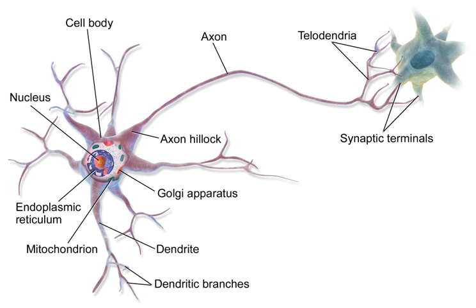Other structural proteins important for neuronal function are actin and the tubulin of microtubules. Actin is predominantly found at the tips of axons and dendrites during neuronal development, where actin dynamics can be modulated via an interplay with microtubules. There are different internal structural characteristics between axons and dendrites. Typical axons almost never contain ribosomes, except some in the initial segment. Dendrites contain granular endoplasmic reticulum or ribosomes, in diminishing amounts as the distance from the cell body increases.